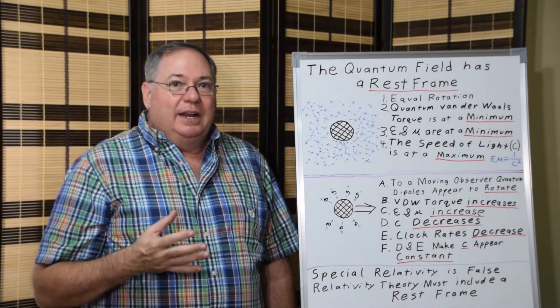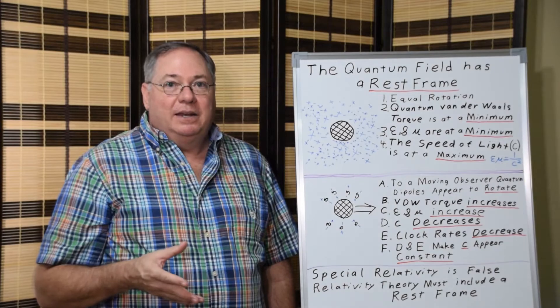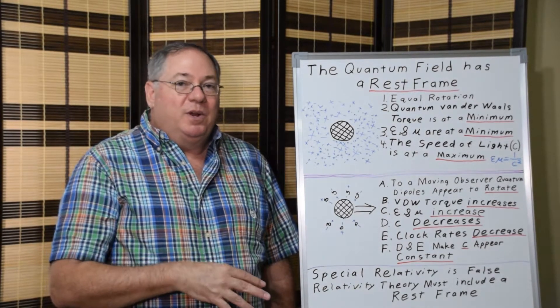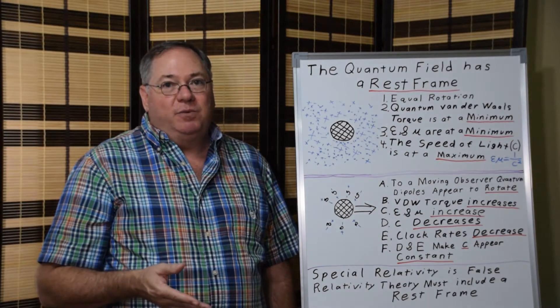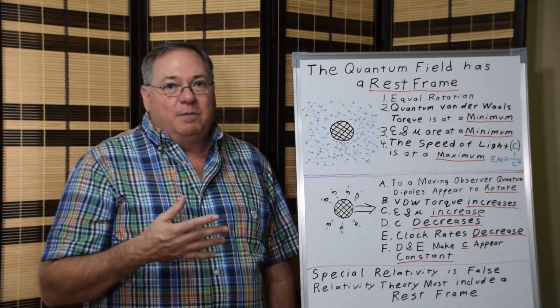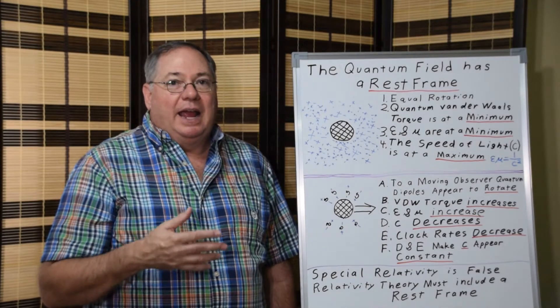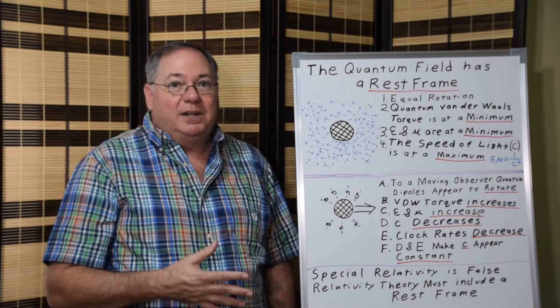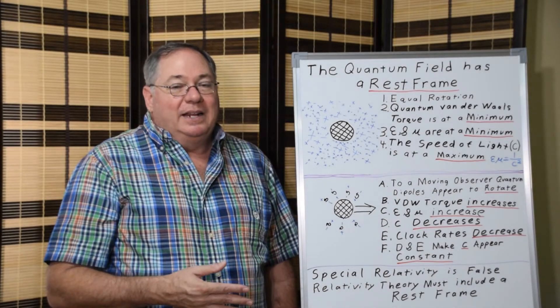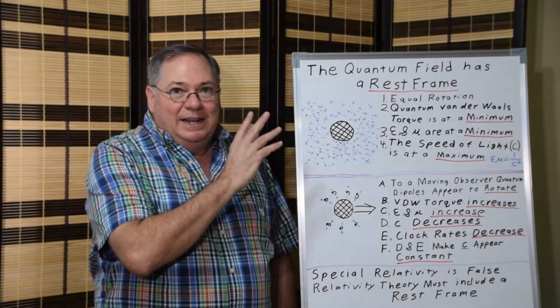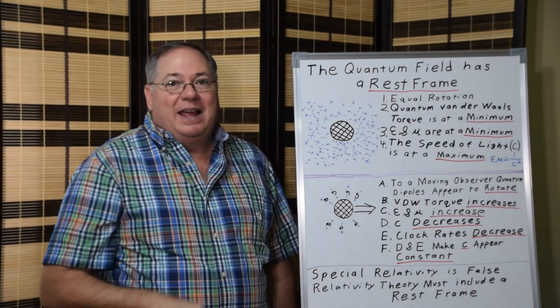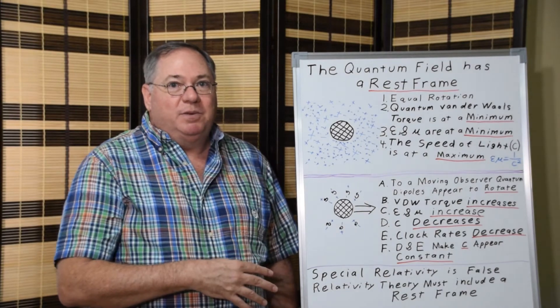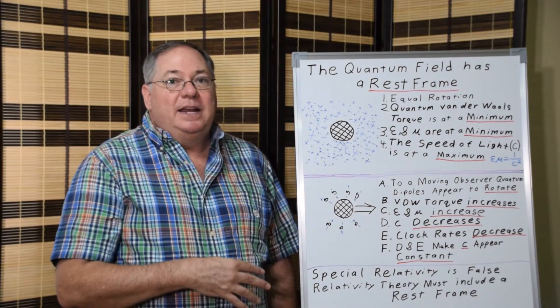Special relativity in its current form needs to be abandoned and replaced with relativity theory where there is a rest frame, which means going back to formulations of Poincaré and Lorentz and then updating those based on our newer knowledge about the quantum field. Einstein's lie about the non-existence of an ether rest frame has led to numerous mistakes with relativity theory that need to be corrected.